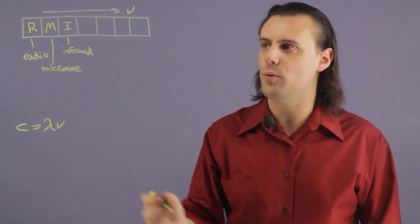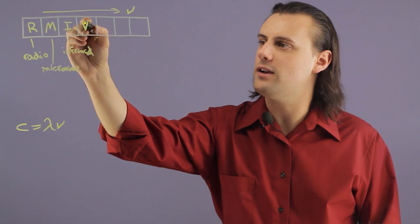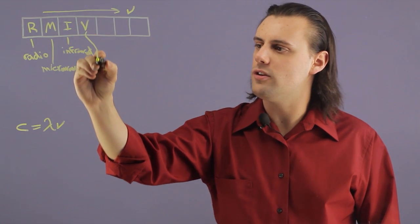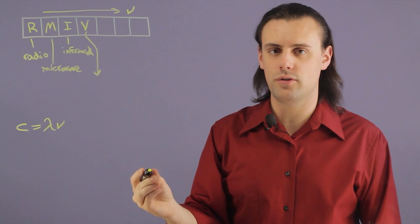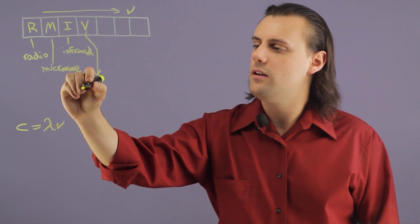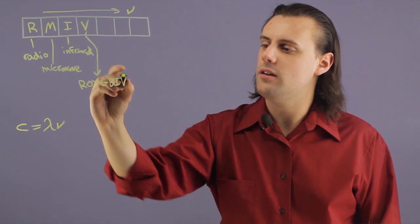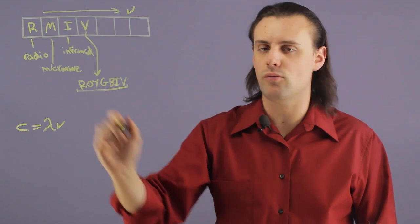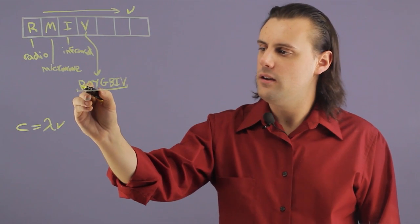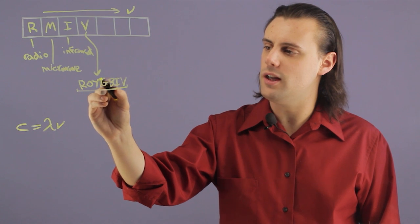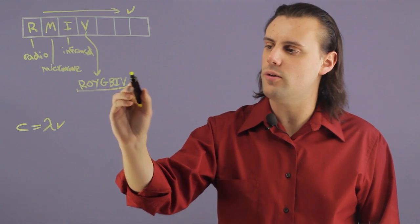Next comes the visible portion of the electromagnetic spectrum for which there is a mnemonic that most children learn known as ROYGBIV. These are the different colors that one would observe in a rainbow. So we have red, orange, yellow, green, blue, indigo, and violet.